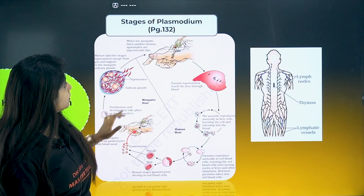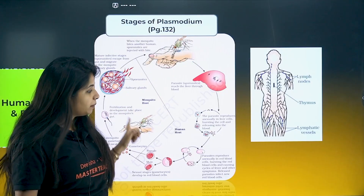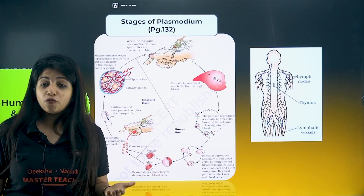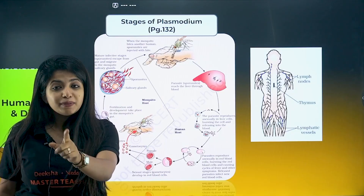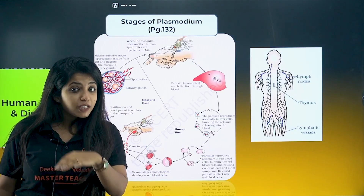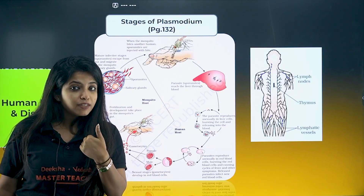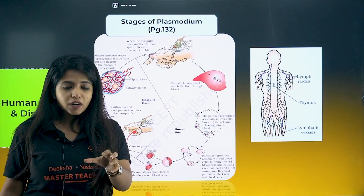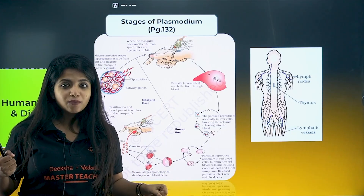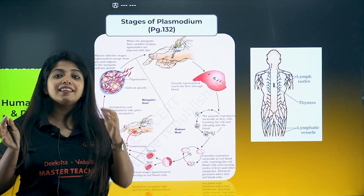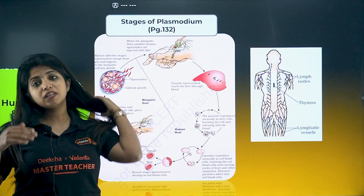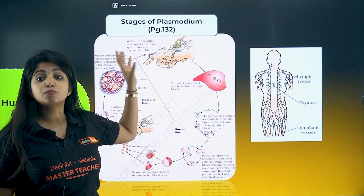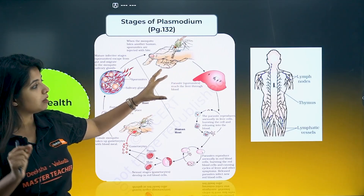In Human Health and Disease, the stages of Plasmodium — this image is very important. Where are the gametocytes formed? Gametocytes are formed inside the RBCs of human beings, but gametes are not formed there — only gametocytes. The mosquito takes them up, and in the gut of the mosquito, the gametocytes divide to form gametes. The stage in which it affects us is the sporozoite stage. All stages are very, very important.